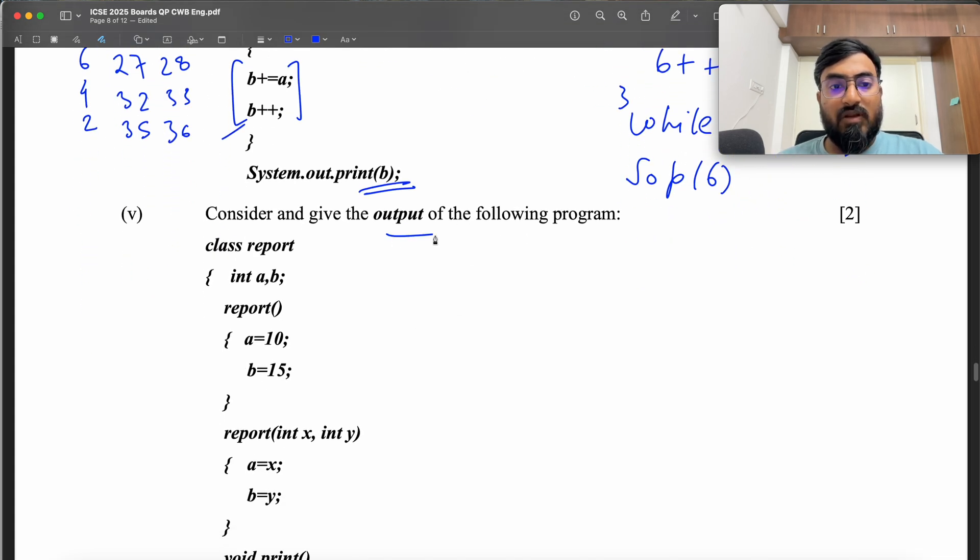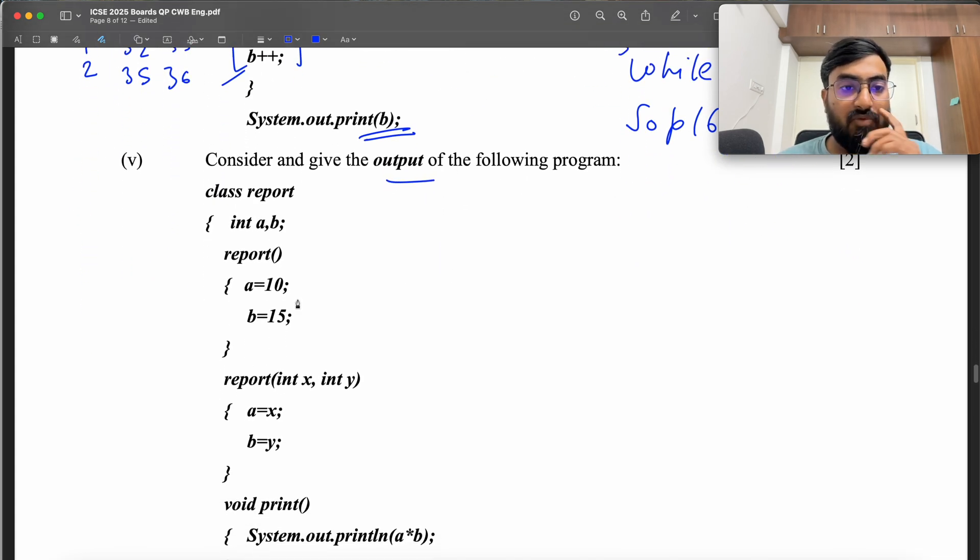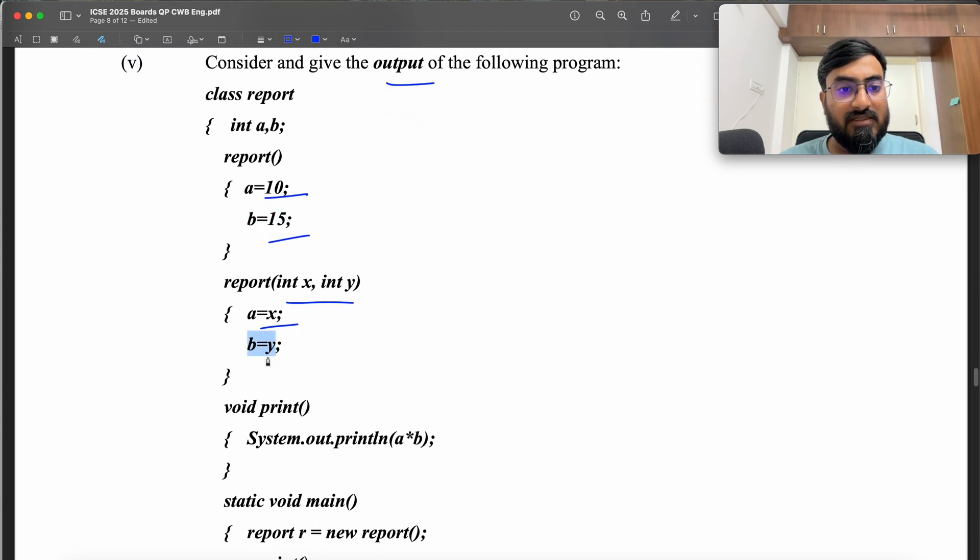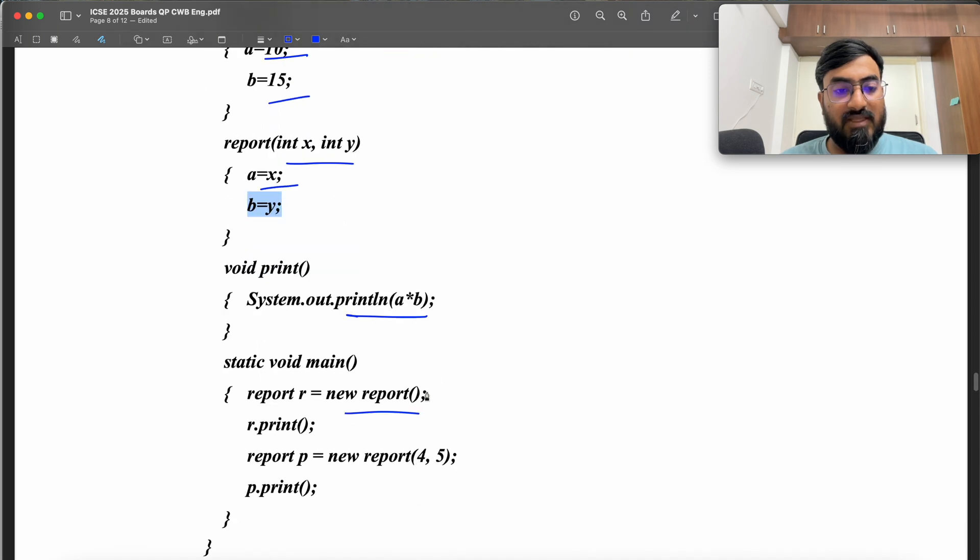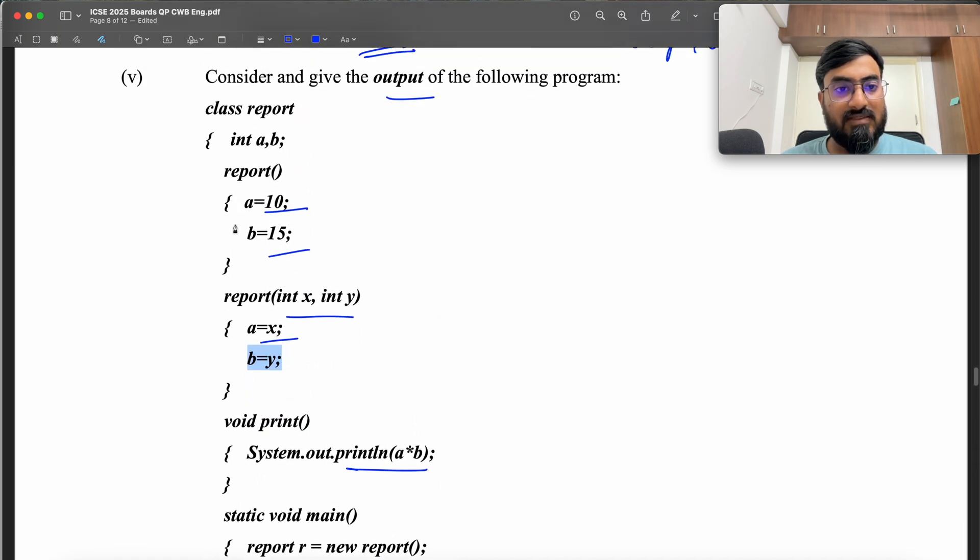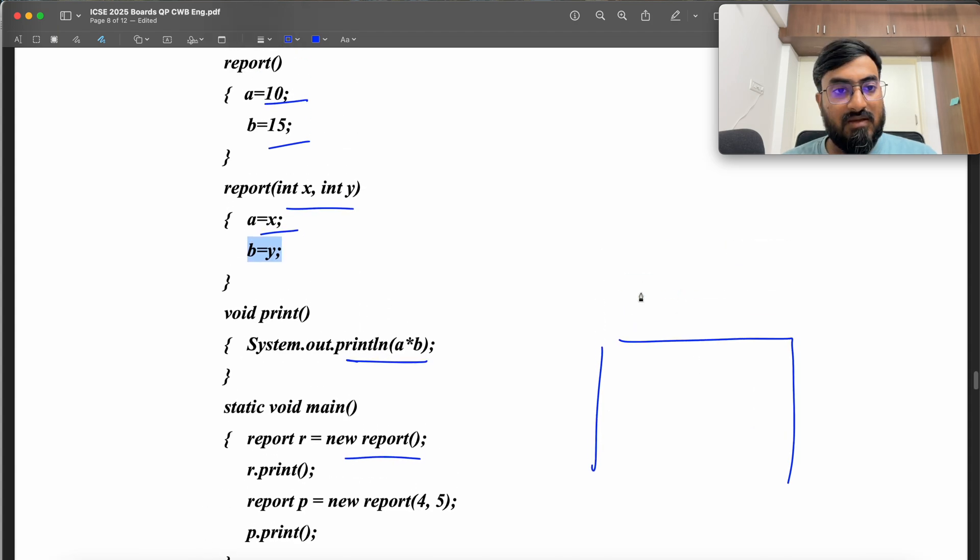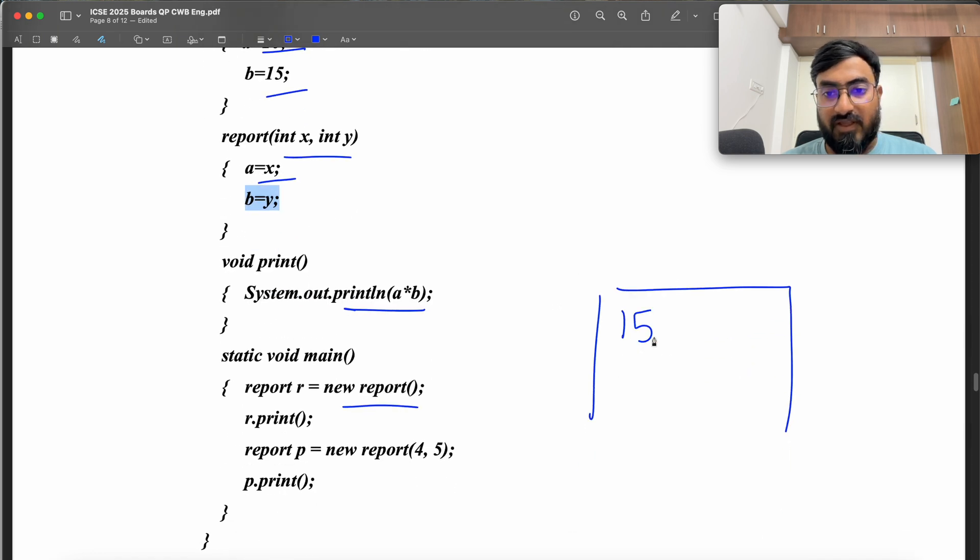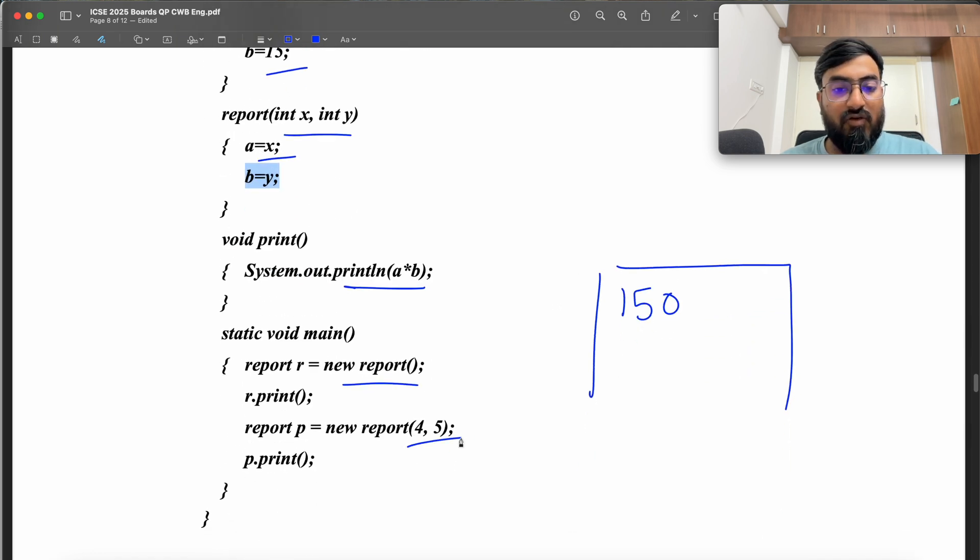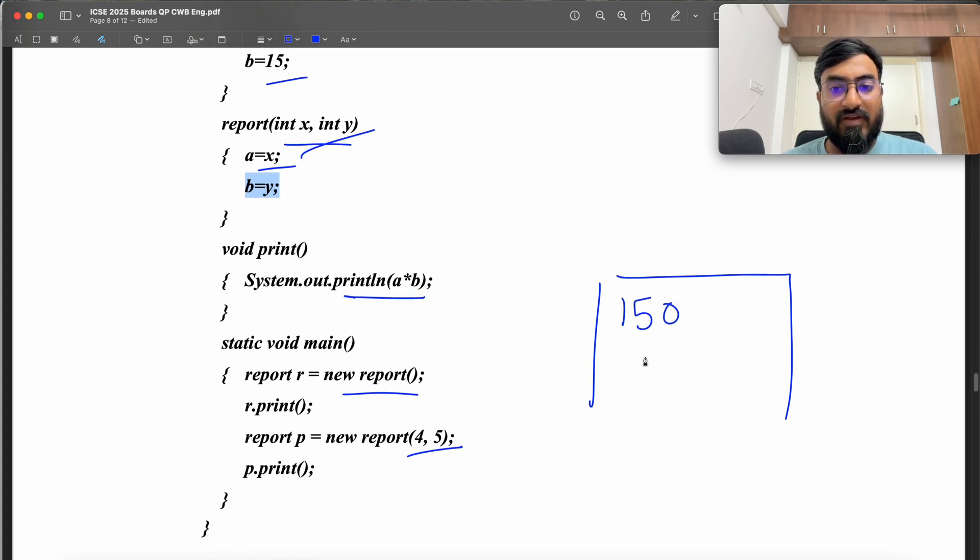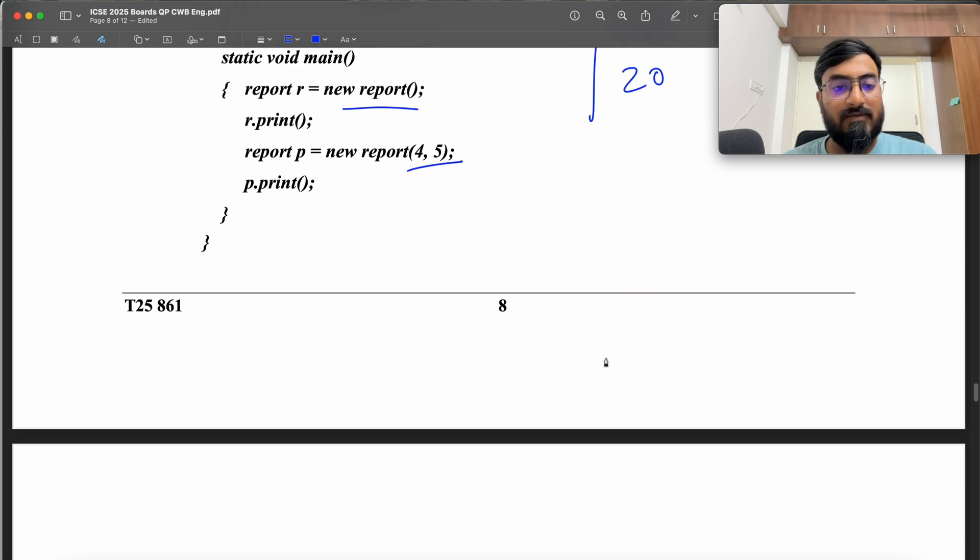Give the output of the following program. Int A B, report constructor has A 10, B 15. X Y is another constructor, A is X, B is Y. Creating a report with default constructor, so A is 10, B is 15. And you call print method. You print A into B, so we have 150. Then you do 4, 5, so call this constructor. A is X, B is Y. A into B, 4 into 5, 20. So 150 and 20.